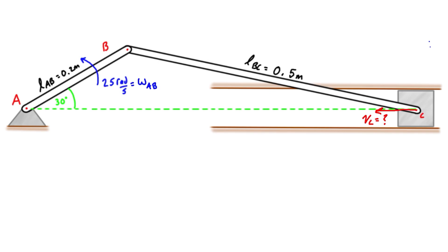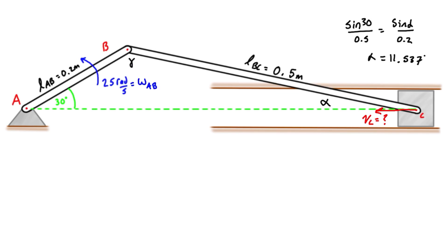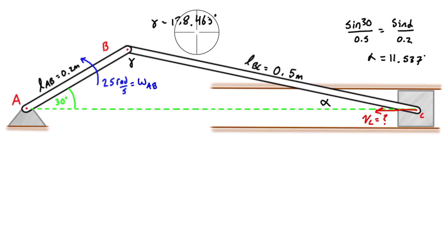To get started, it's easiest to identify all of the angles inside our triangle. Looking at angle alpha first, we use the sine law: sine 30 over 0.5 equals sine alpha over 0.2, and rearranging gives alpha equal to 11.537 degrees. Labeling the remaining angle as gamma, we take 180 minus 30 minus 11.537 to get gamma equal to 138.463 degrees. You can get away without calculating this one, but we will need it in upcoming methods.